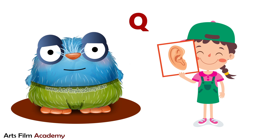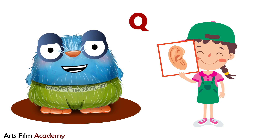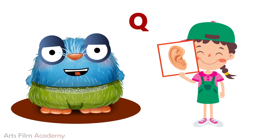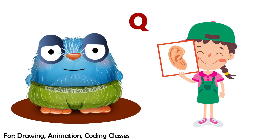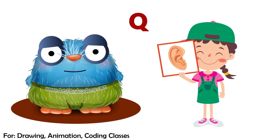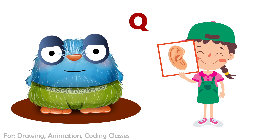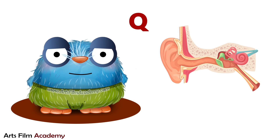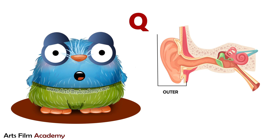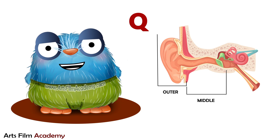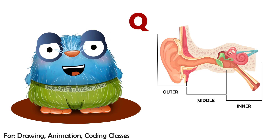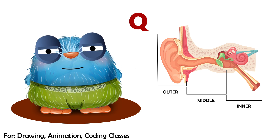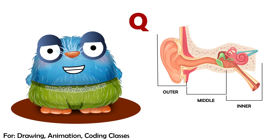Now tell me about the sense organ ear. Ear helps us to hear sounds. And its parts? Outer ear, middle ear, inner ear. Very good.